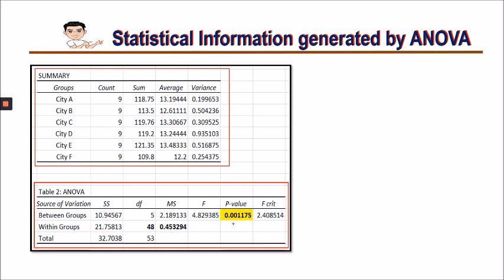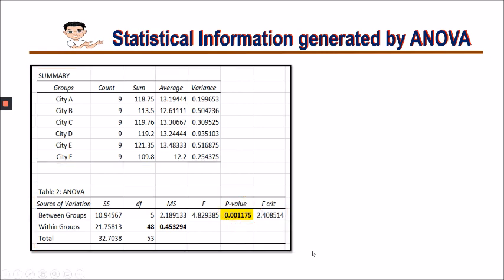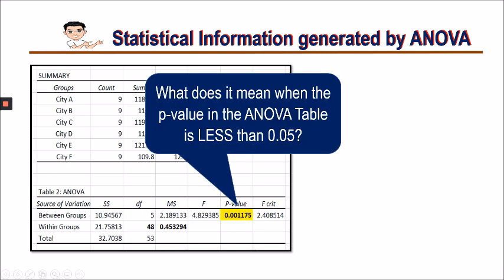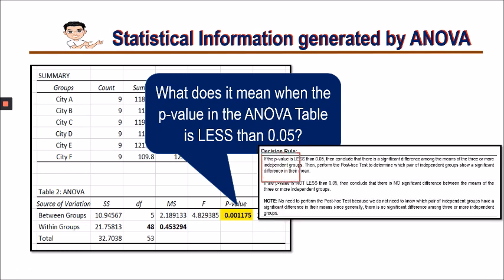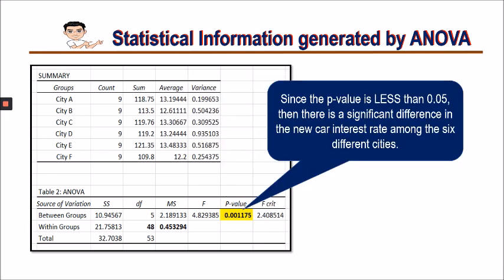We are interested in comparing the p-value to 0.05. In this example, the p-value is actually less than 0.05 — it is 0.001. Recalling the decision rule: if the p-value is less than 0.05, we conclude that there is a significant difference among the means of the three or more independent groups. Therefore, since the p-value is less than 0.05, there is a significant difference in the new car interest rate among the six different cities.